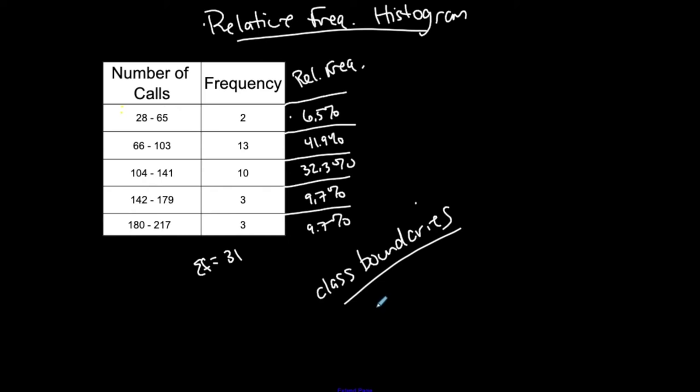Class boundaries. So I said, sometimes it's easier to take the class boundary between the upper class limit of the first class and the lower class limit of the second class. So between 65 and 66 is 65.5. And then keep going, 103.5, 141.5, 179.5, and then 217.5.